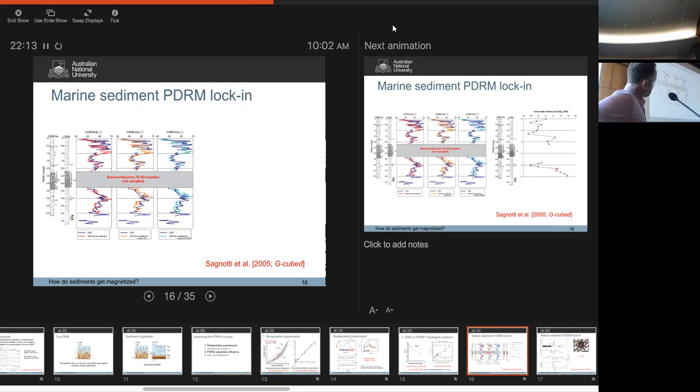This is a paper published by Leonardo Signotti and colleagues in Italy, and what they did was they took a pair of sediment cores from the Gulf of Salerno, and they measured the secular variation in that record.